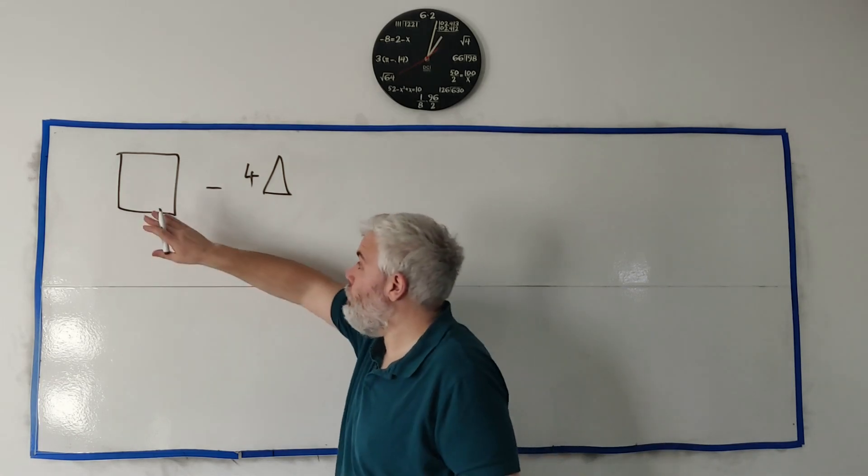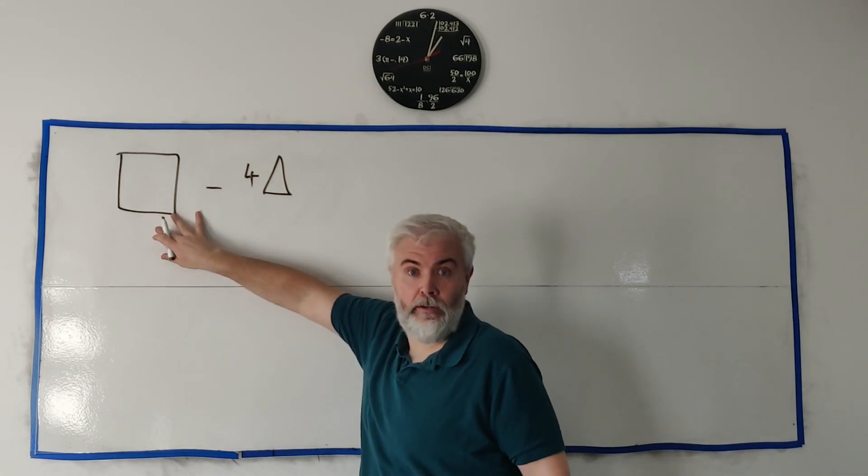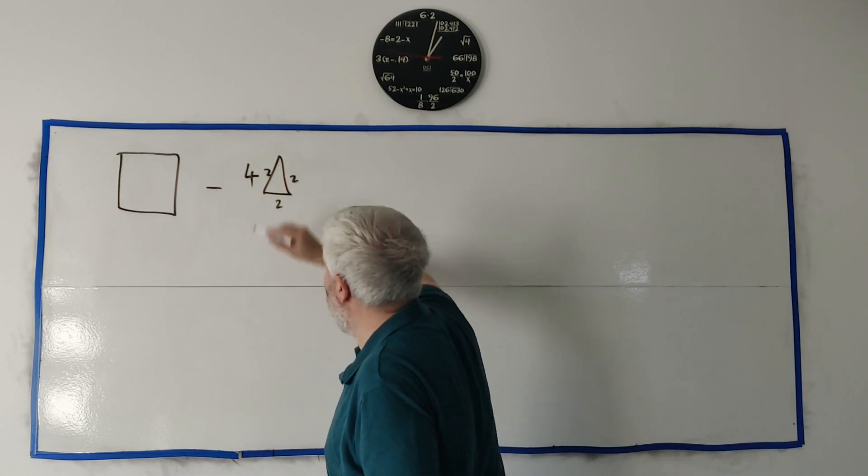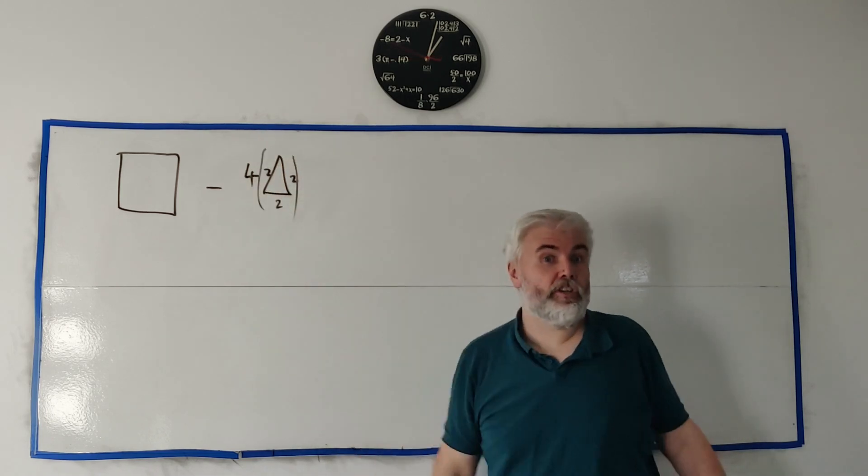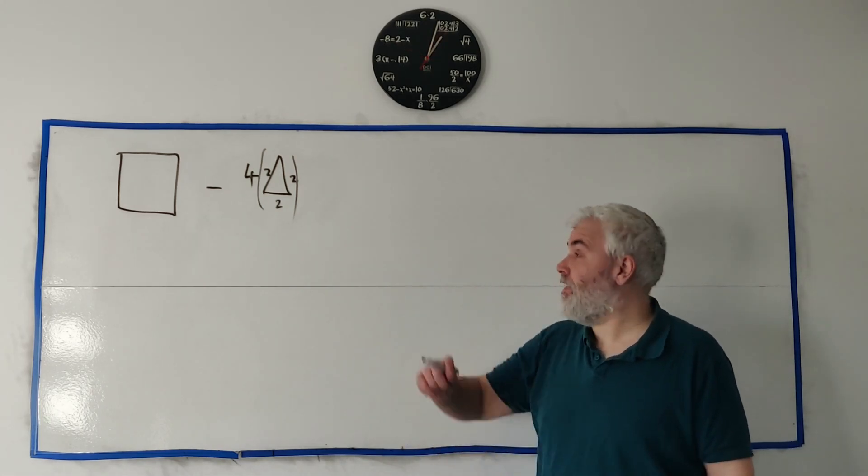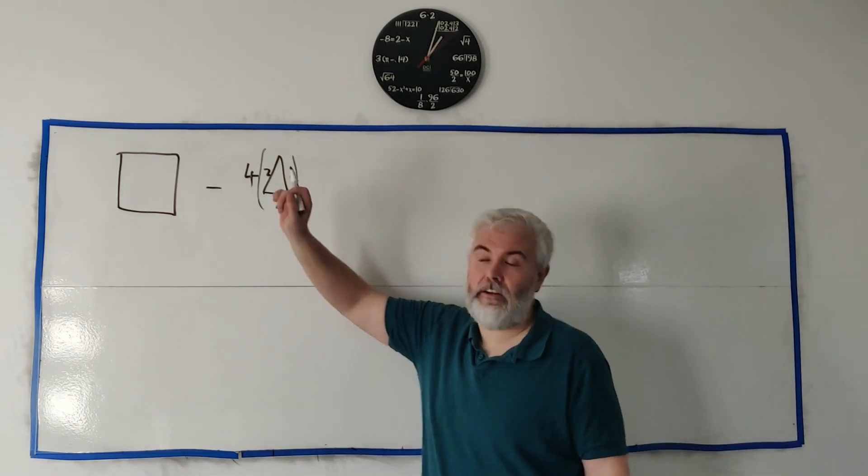Finding this will find the answer to this question. The only problem is we don't know the lengths of the square. We do know the lengths of the triangle. They're two, two, and two. Let's put a bracket around that so it's not confusing with the four. So really now the question becomes what's the area of the triangle and what's the area of the square.